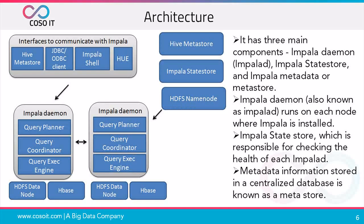Let us see Impala architecture. Impala server is a distributed massive parallel processing database engine. It consists of different daemon processes that run on specific hosts within your CDH cluster. It has mainly three components: Impala daemon, Impala state store, and Impala metadata or meta-store.